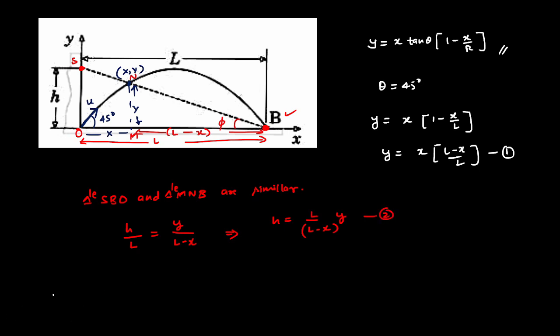So use equation one and two. So we can say that h is going to be l by l minus x times x into value of y. Value of y from equation one, we have x into l minus x by l. So you can simplify and say h is equal to x. Suppose if h is equal to x, then it is kind of surprising result for some students. So h is equal to x we got.